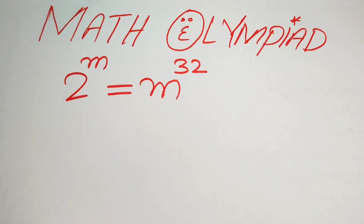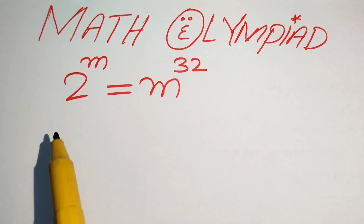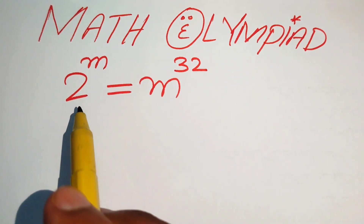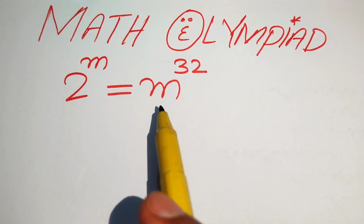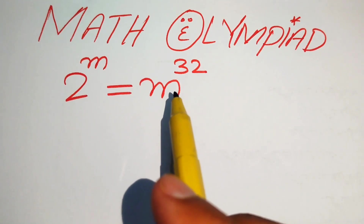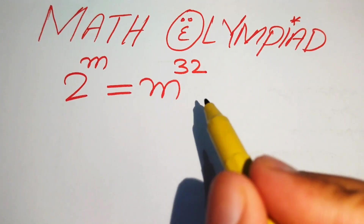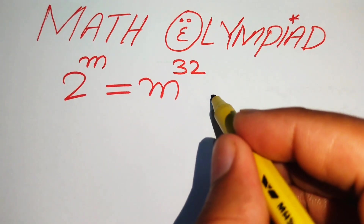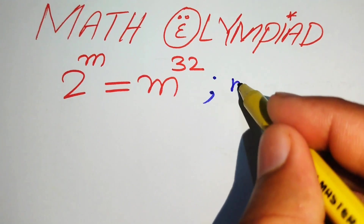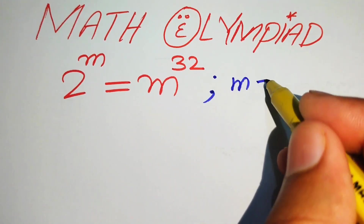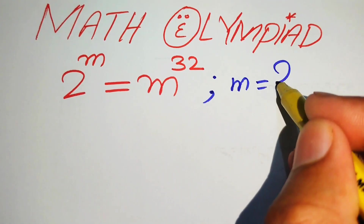Hello everyone, welcome. We are going to solve this math algebra problem. Here we have 2 to the power of m equals m to the power of 32, and we solve this problem for the values of m.